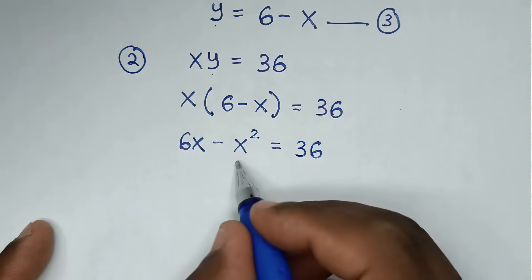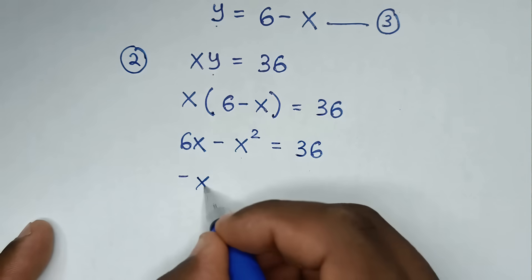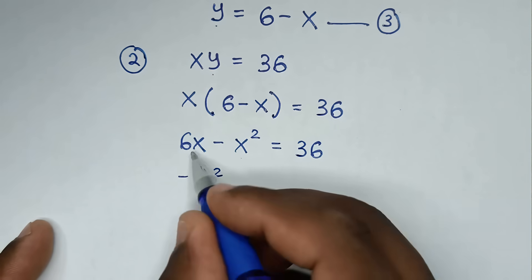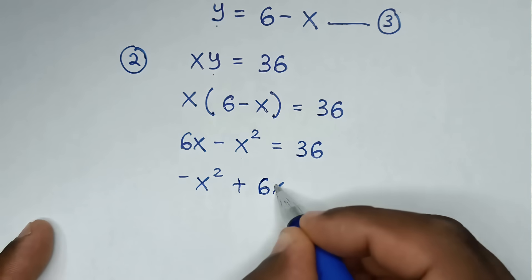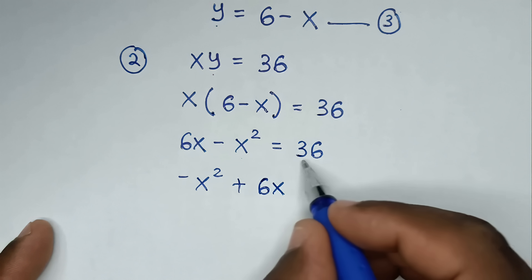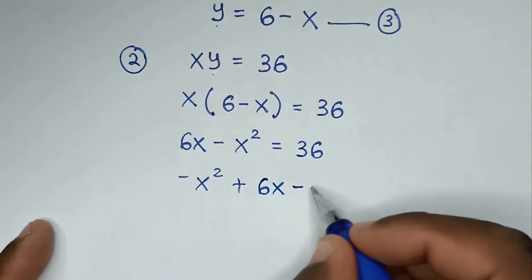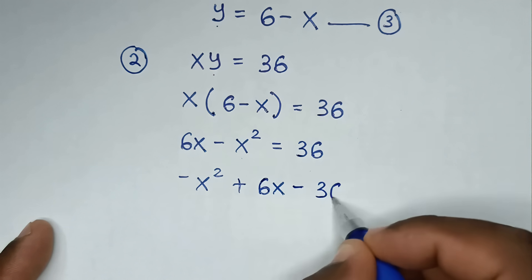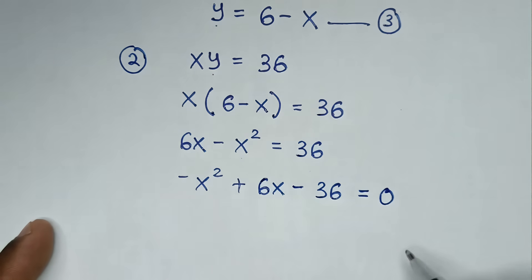Then we rearrange: negative x squared plus 6x, and we take 36 to the left side to be minus 36, equal to 0.